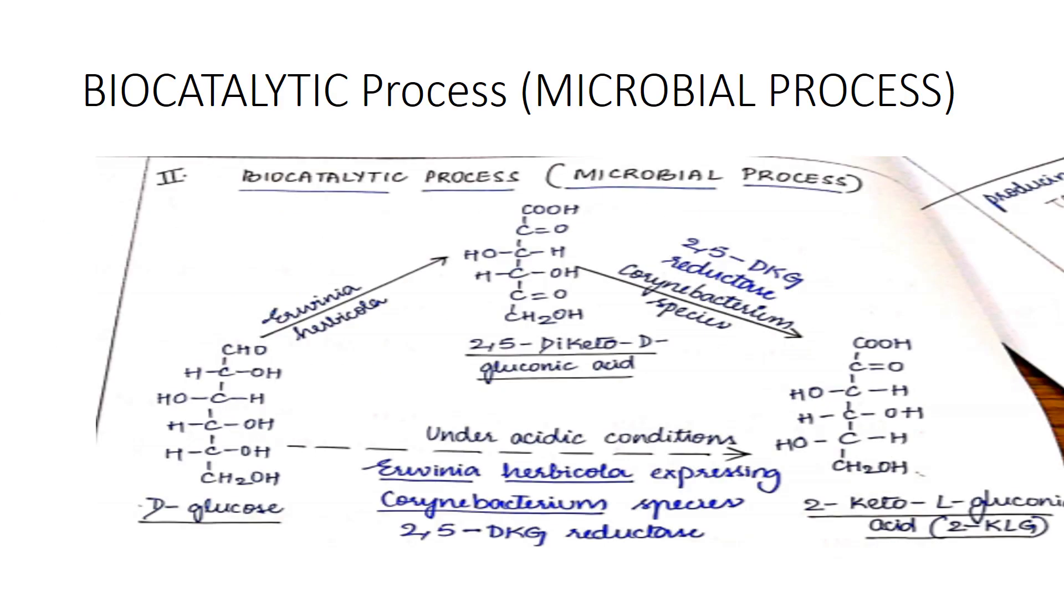Just observe the flow chart. What we require is simple sugar - glucose. If you observe the arrow mark, there are two microorganisms - one is Erwinia herbicola and one more is Corynebacterium species. Just observe the flow chart properly.